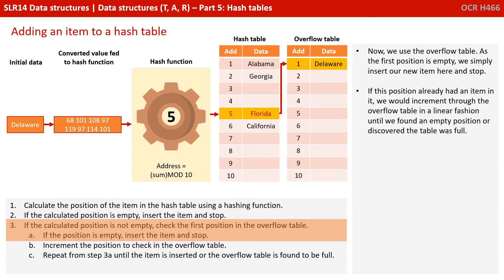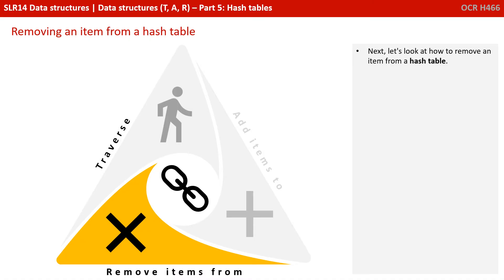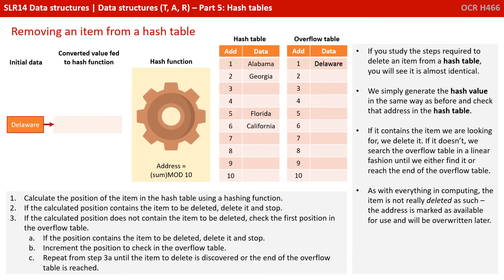If this position already had an item in it, we would increment through the overflow table in a linear fashion until we found an empty position or discovered the overflow table was full. To remove an item from a hash table, the steps are almost identical. We simply generate the hash value in the same way as before and check the address in the hash table. If it contains the item we're looking for, we delete it. If it doesn't, we search the overflow table in a linear fashion until we find it or reach the end. As with everything in computing, the item is not really deleted as such — the address is marked as available for use and can be overwritten later.